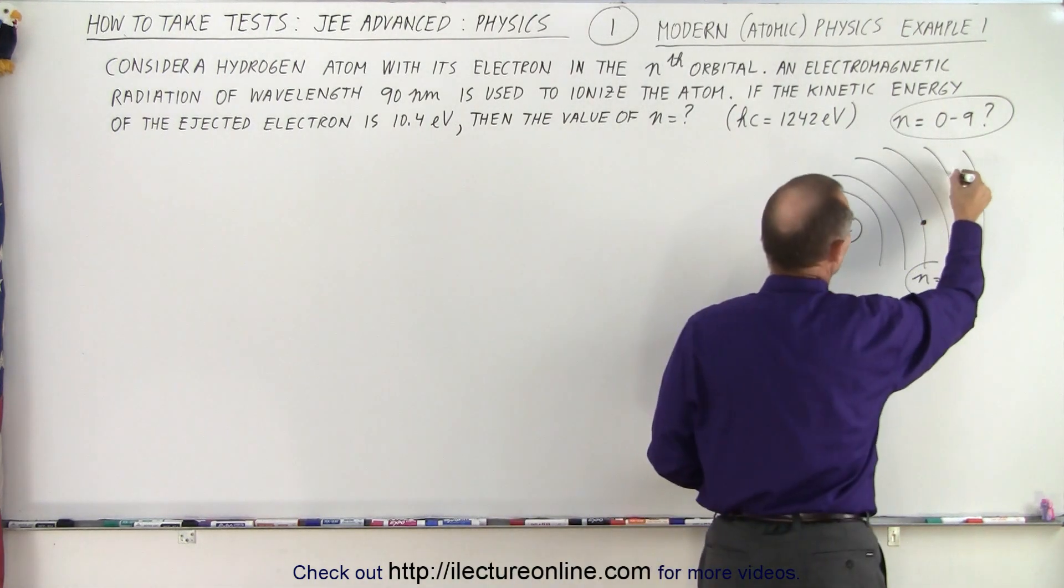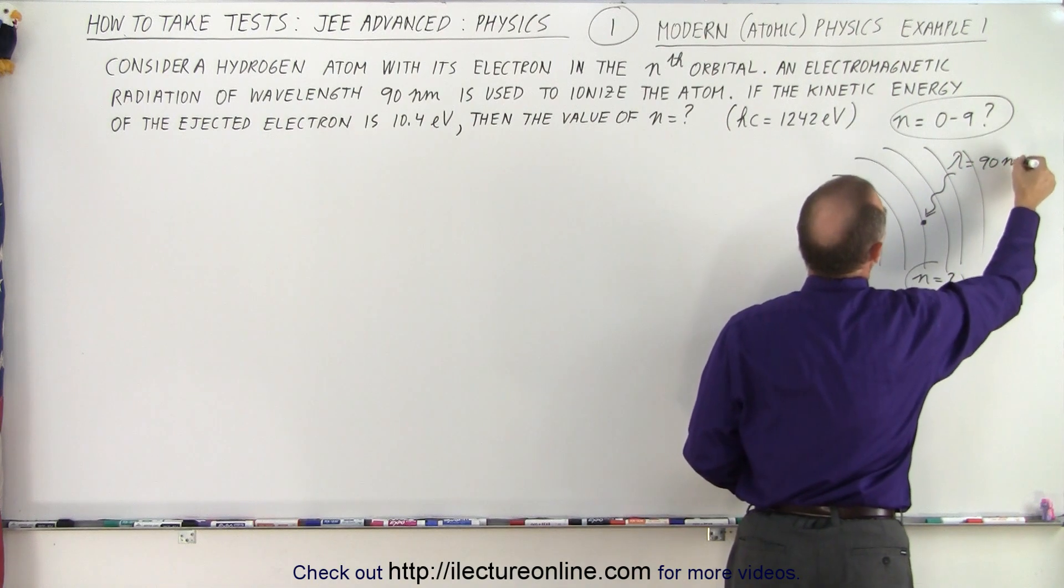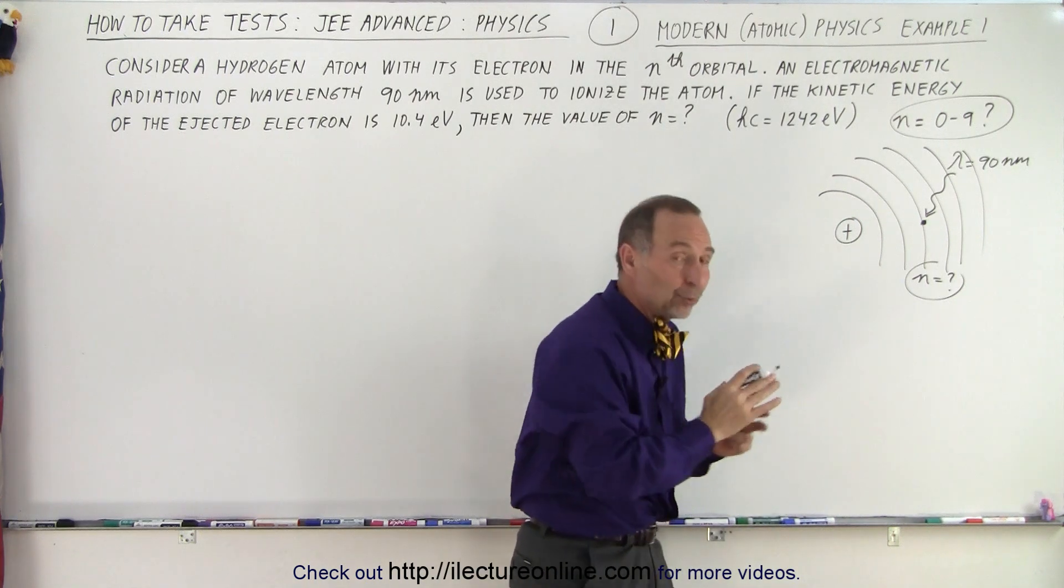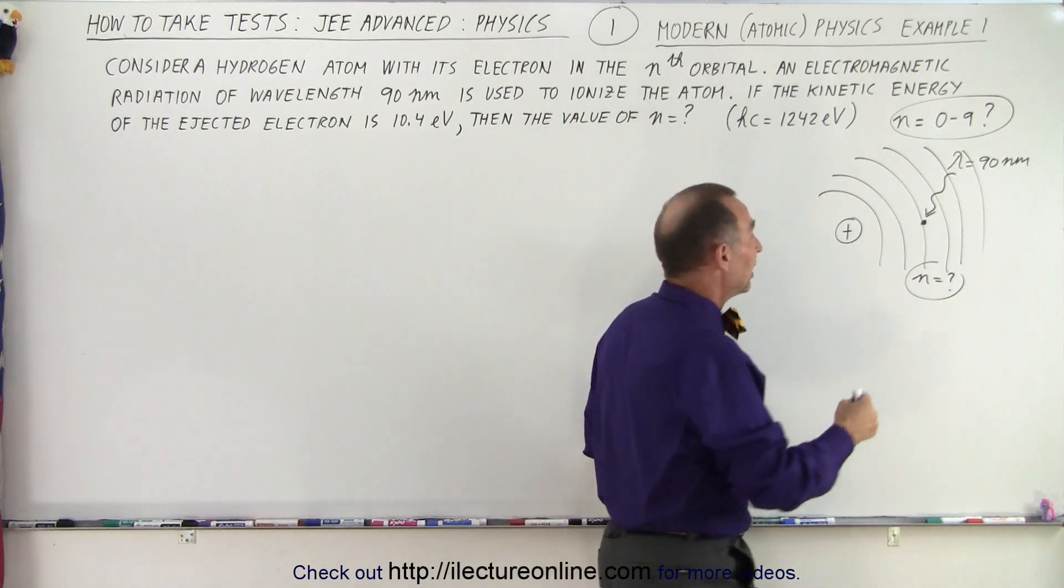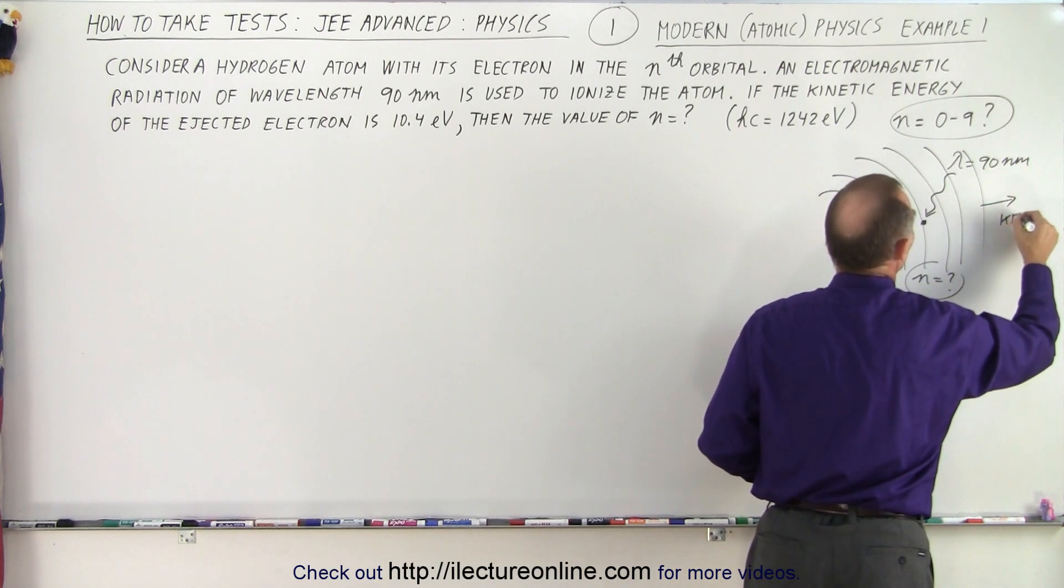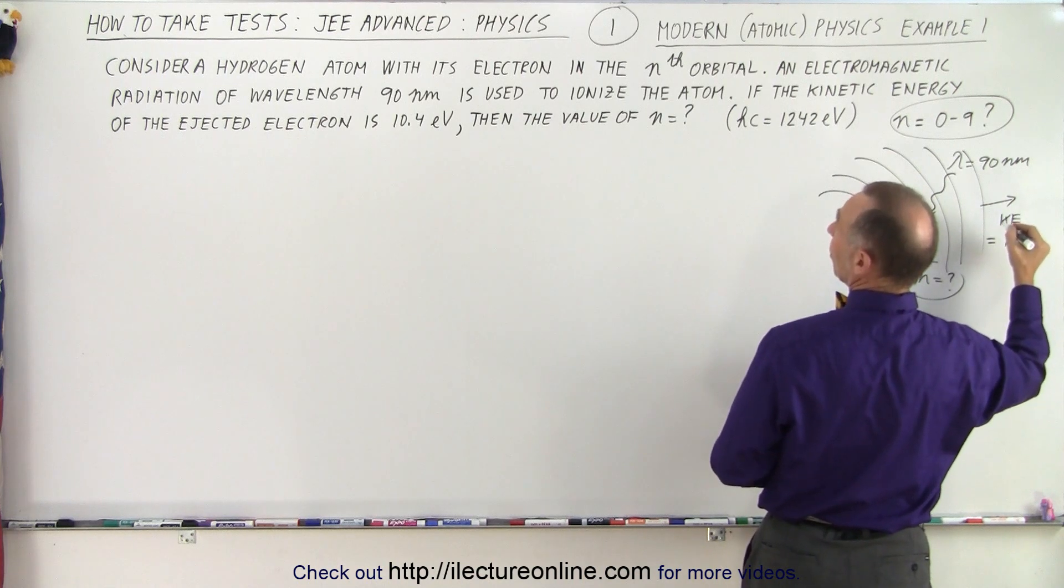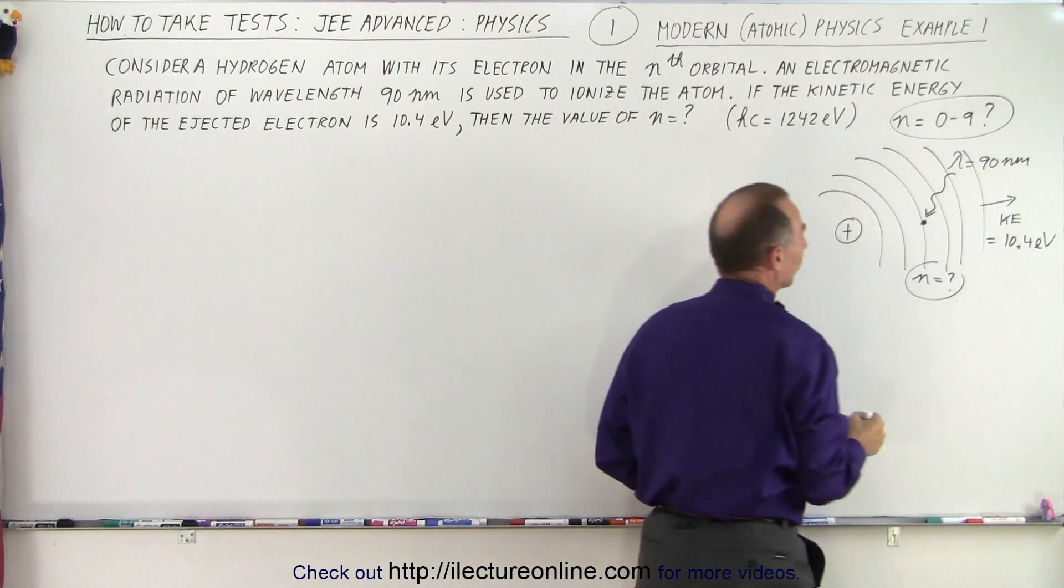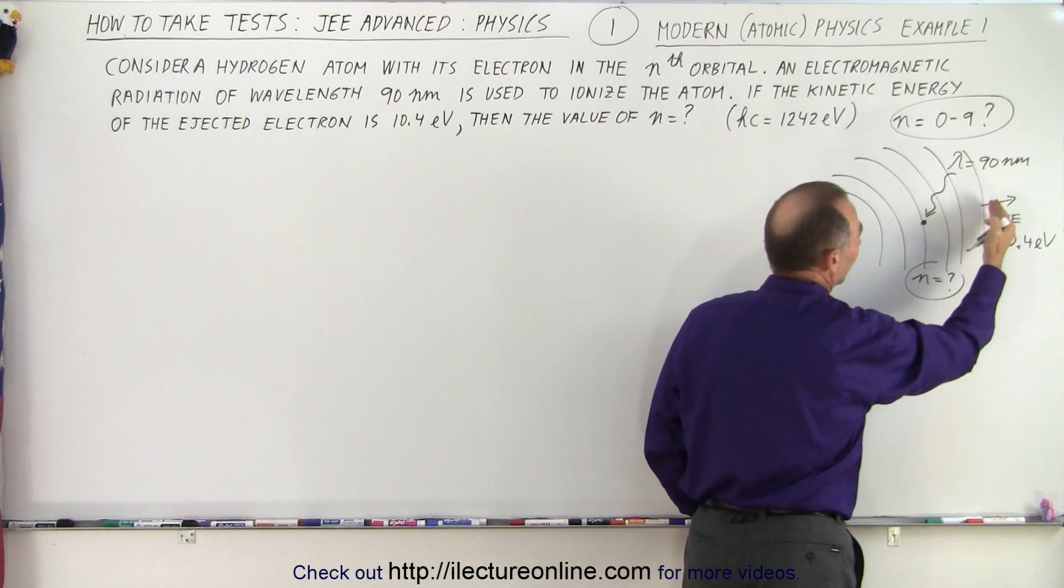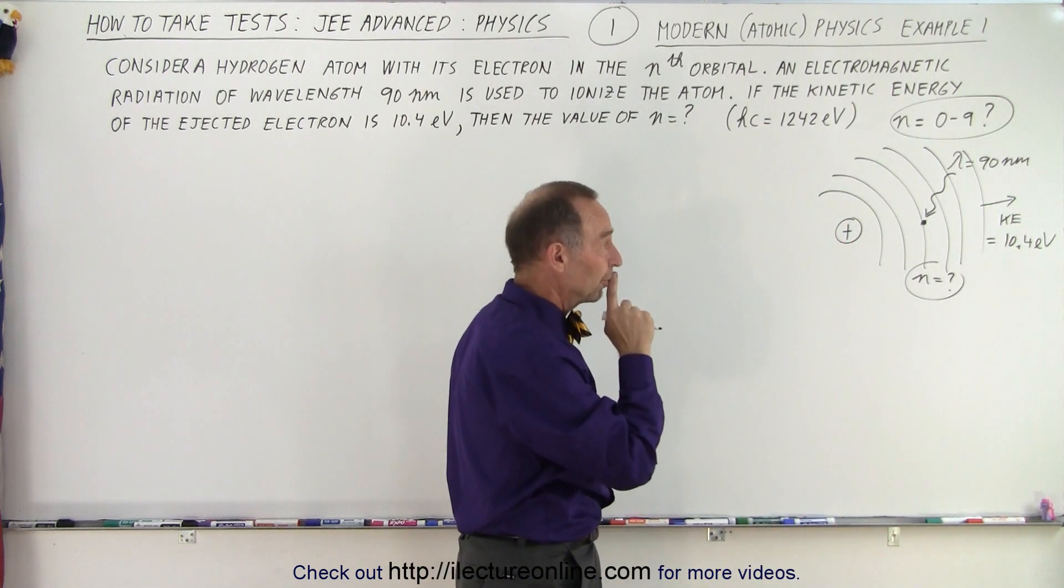Now, a photon comes in where the wavelength is equal to 90 nanometers. It's 90 nanometers, we know that's in the ultraviolet range, so that has a fair amount of energy. And it's supposed to be able to kick the electron out so that the electron has kinetic energy as it is ejected of 10.4 electron volts. So that means that the photon has enough energy to ionize it out of the orbit that it's in, plus giving it an additional 10.4 electron volts.